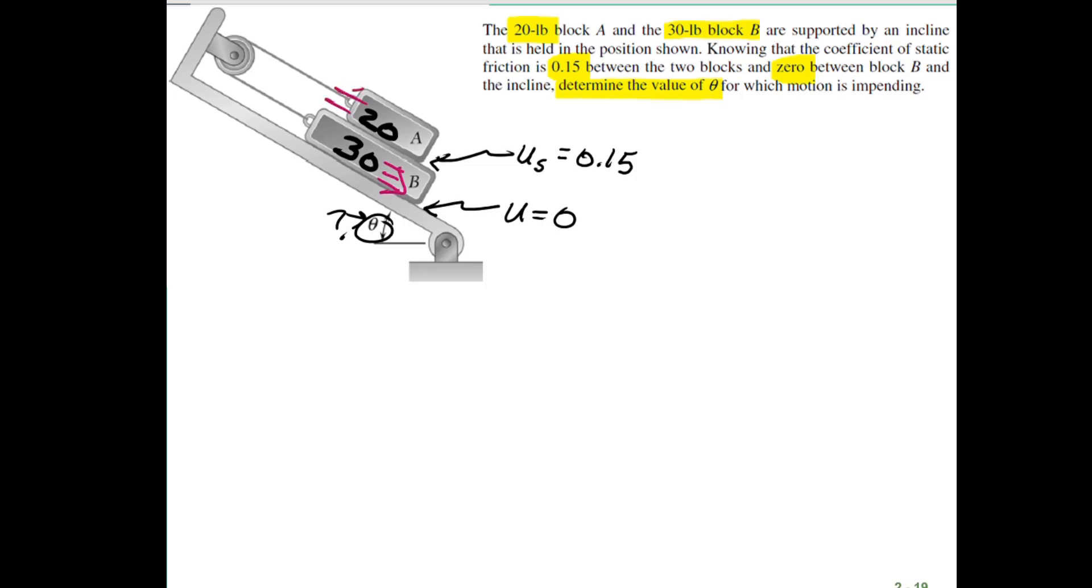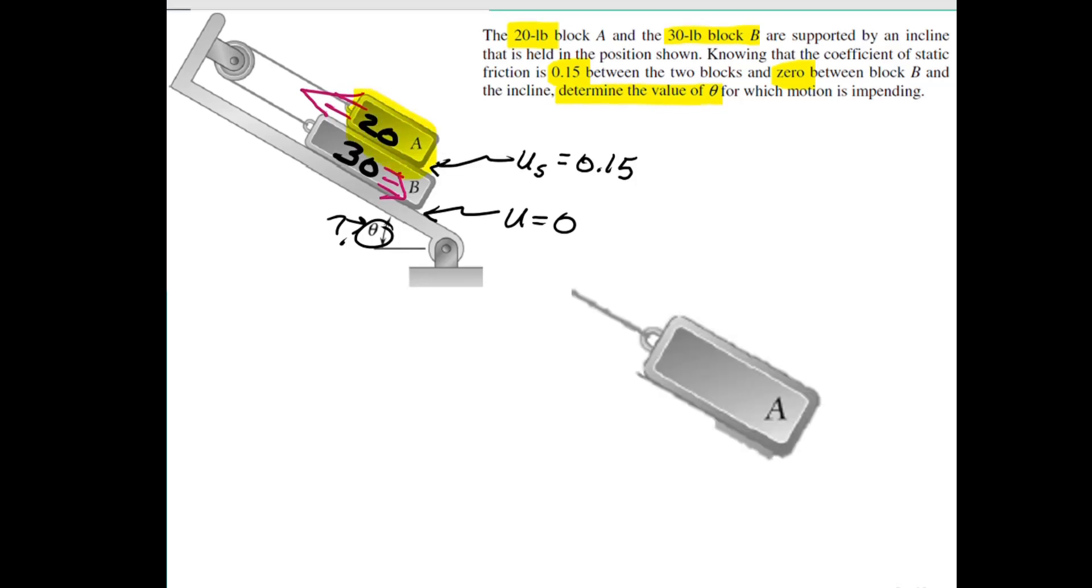Think about which way it's going to move. 30 pounds is larger, so B is going to slide down, and A is going to slide up, and we're going to start by analyzing block A. So isolate that top block, and we're going to draw all of the forces acting on A, and look at everything in the normal and tangent directions.